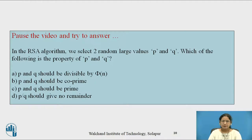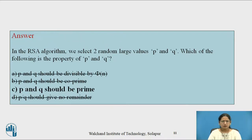Now dear students, please pause the video and try to answer. In the RSA algorithm we select two random large values p and q. Which of the following is the property of p and q? a) p and q should be divisible by phi of n, b) p and q should be co-prime, c) p and q should be prime, d) p by q should give no remainder. Just revise. So p and q should be prime, that is the basic property while selecting two random p and q.